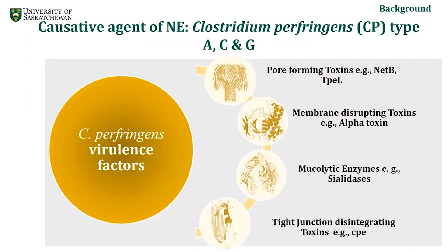C. perfringens secretes a wide range of enzymes and exotoxins. For example, mucolytic enzymes including different types of collagenase help in breaking down the mucous layer of the intestine, followed by membrane-disrupting toxins such as alpha toxin, and pore-forming toxins which include mainly NetB and TpeL. Sometimes it also secretes tight junction disintegrating toxins, which is CPE.